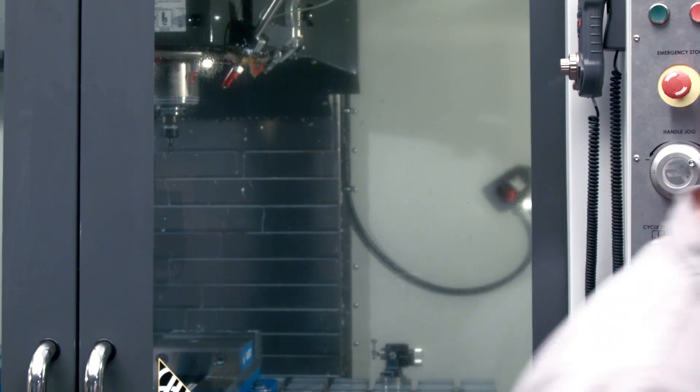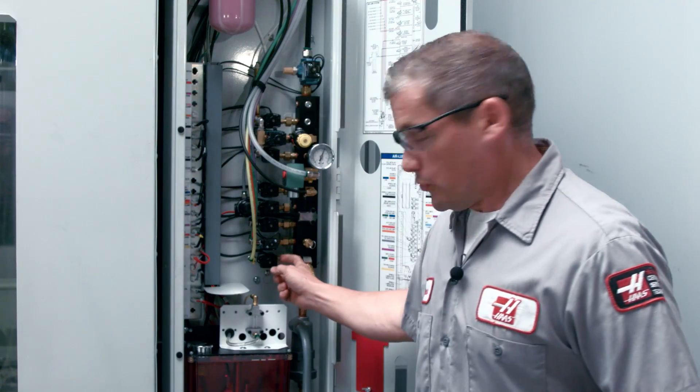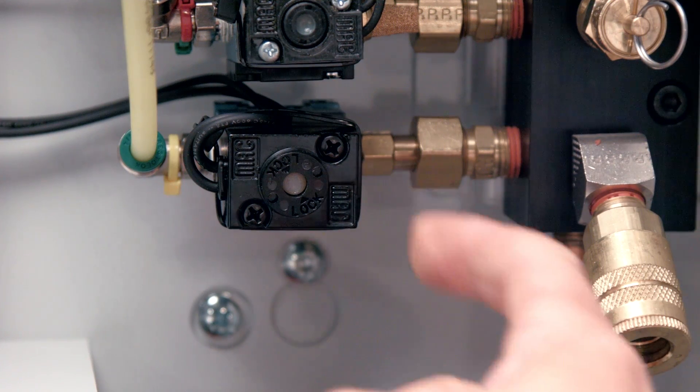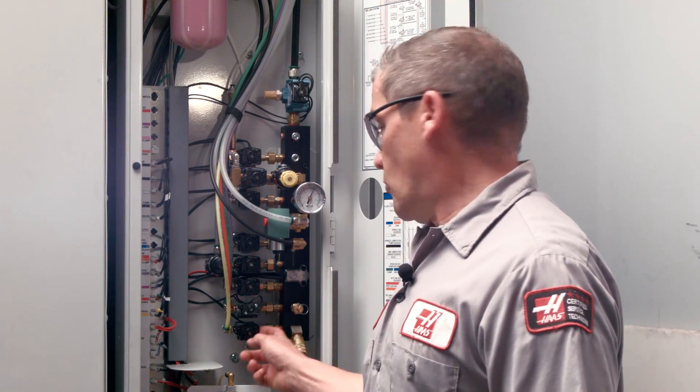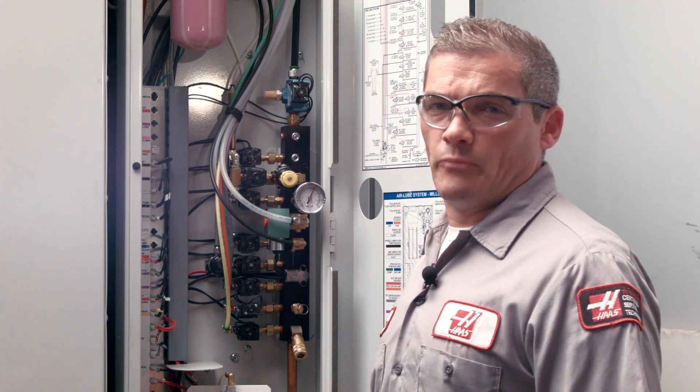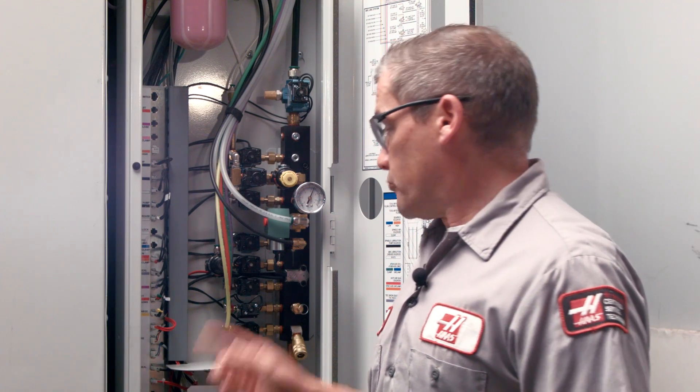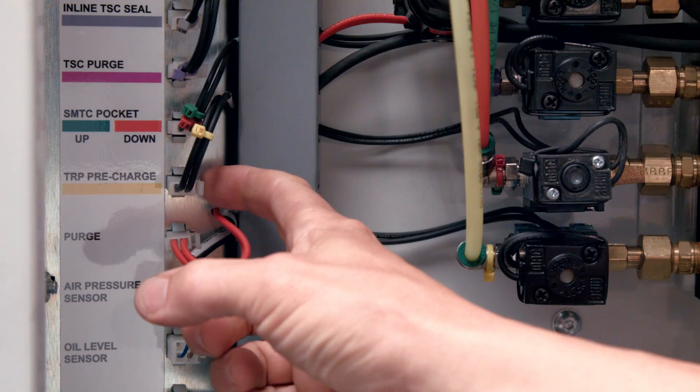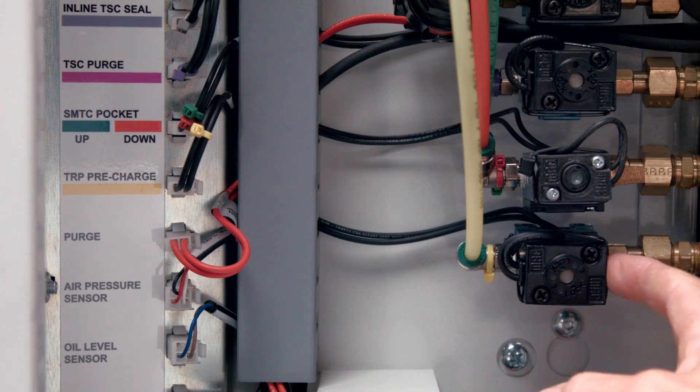Number one: is the solenoid receiving the correct electrical signal to turn it on and off? And number two: is the solenoid getting a sufficient amount of air and is it getting that air in a consistent manner? Let's consider a hypothetical example. Say I'm having problems with tool clamping and I suspect I have a problem with the TRP circuit. That leads me to check the TRP pre-charged solenoid right here.